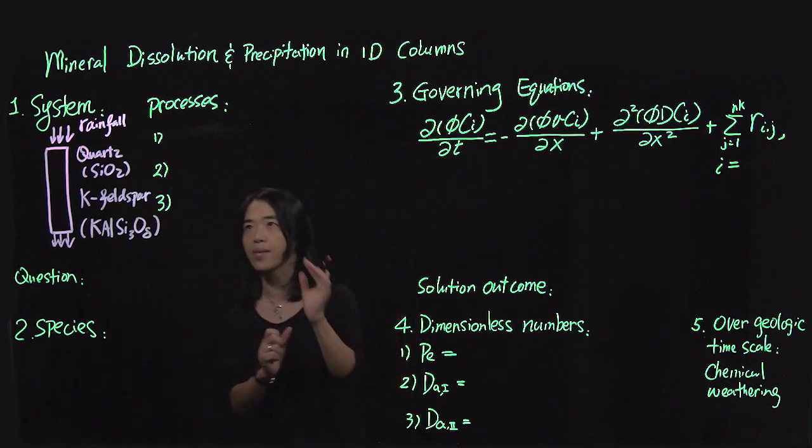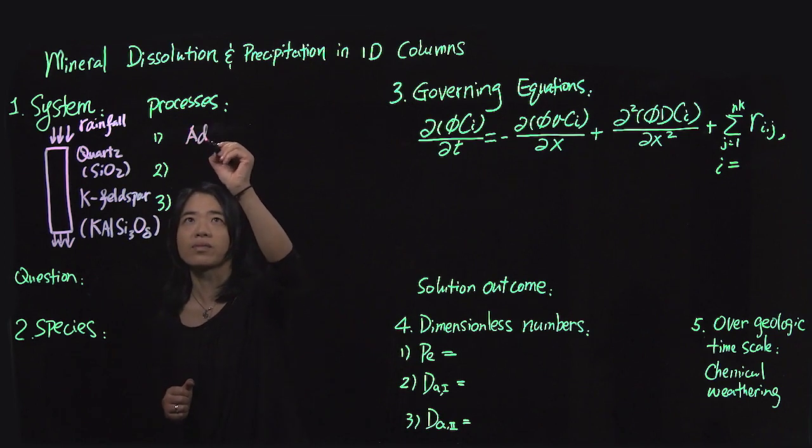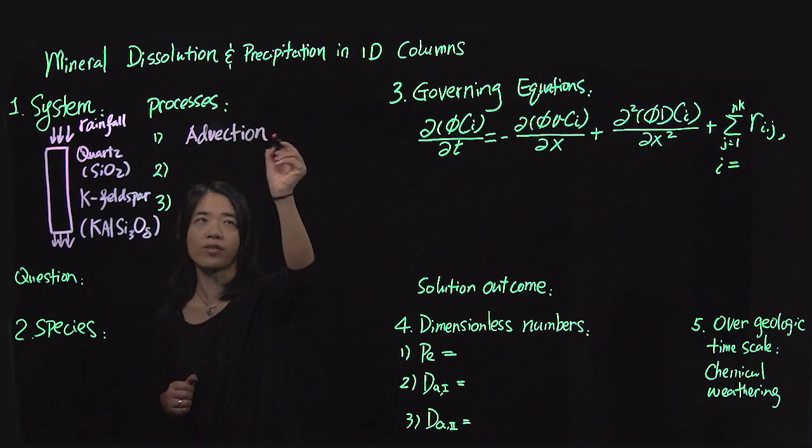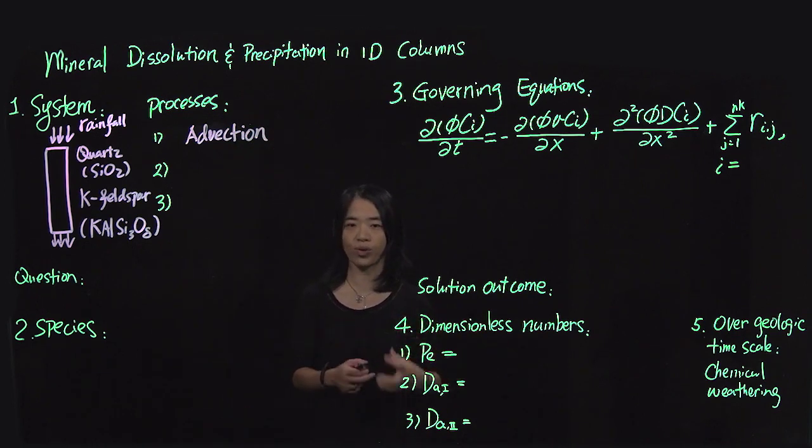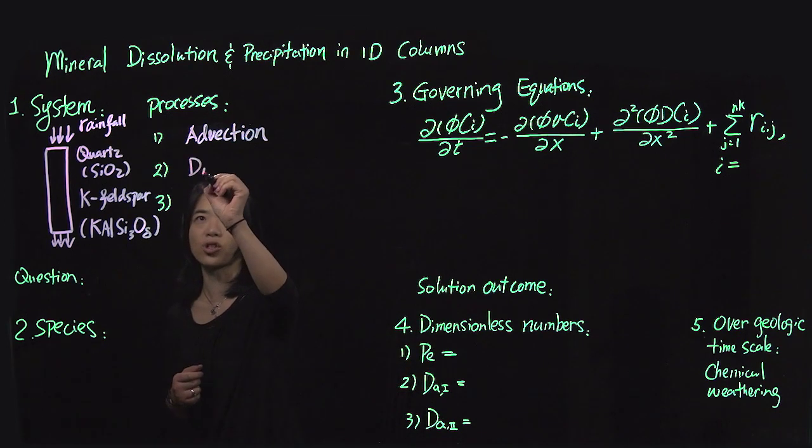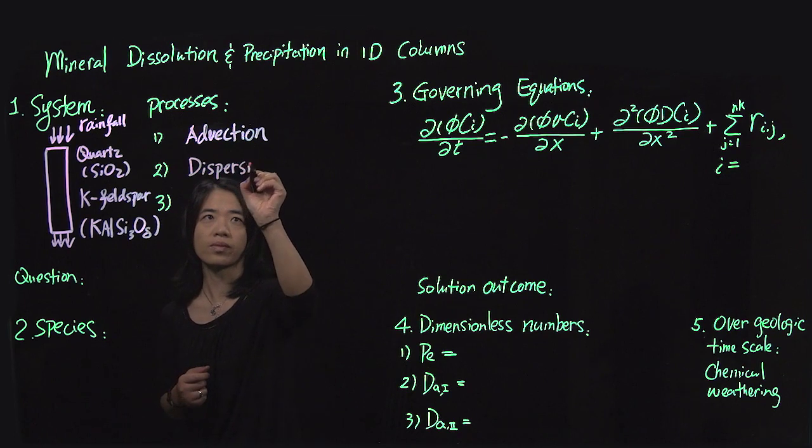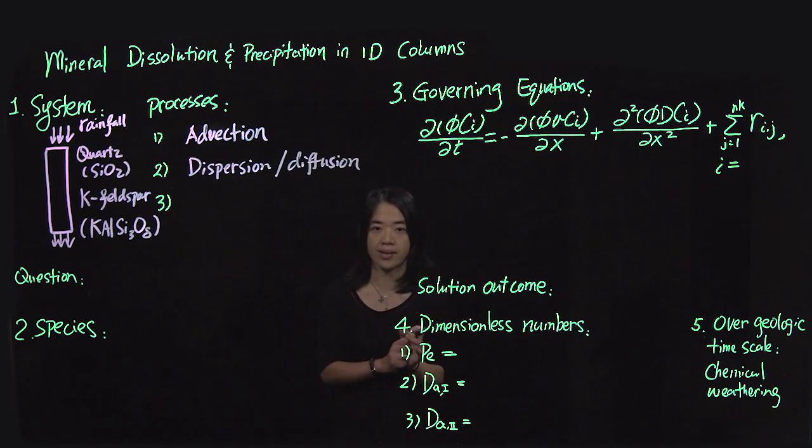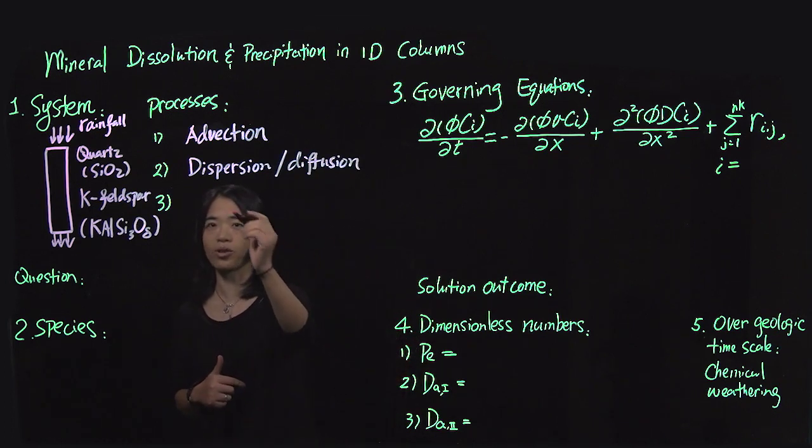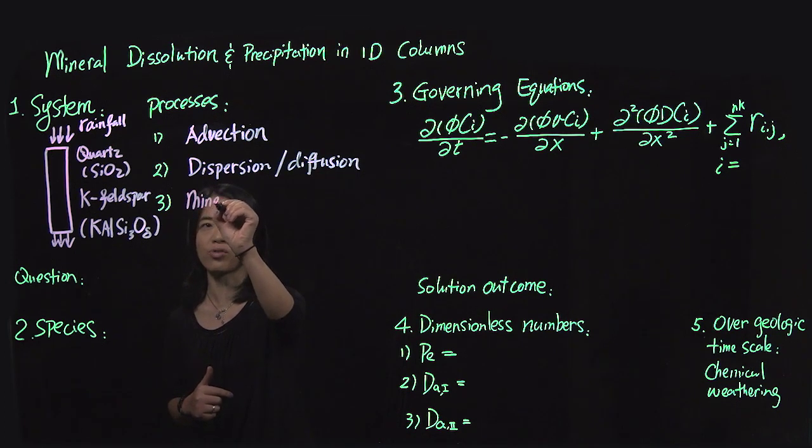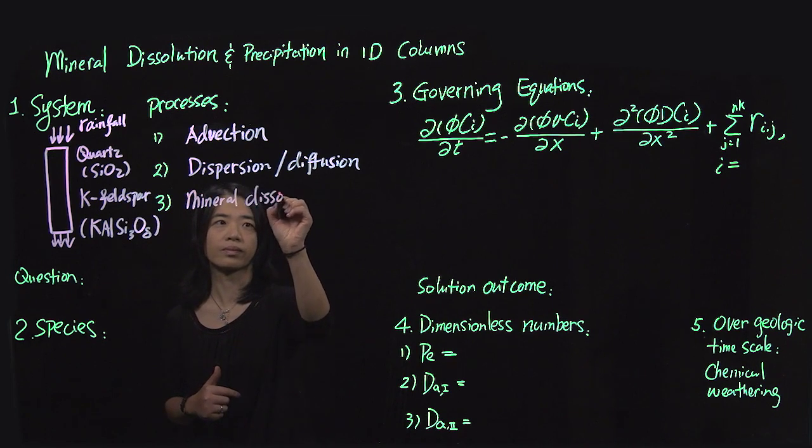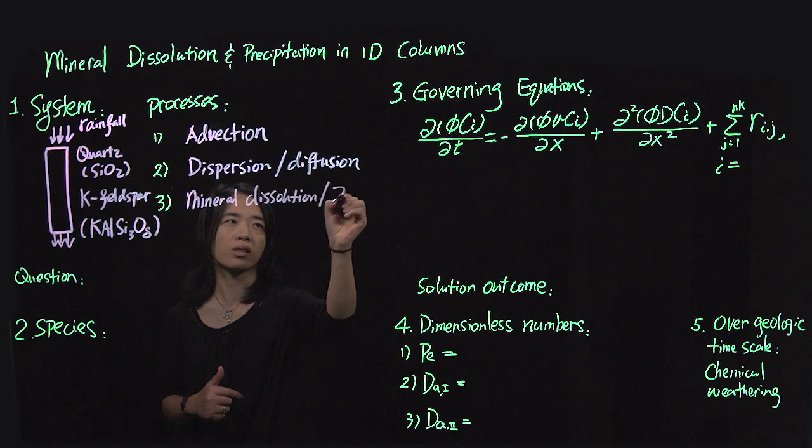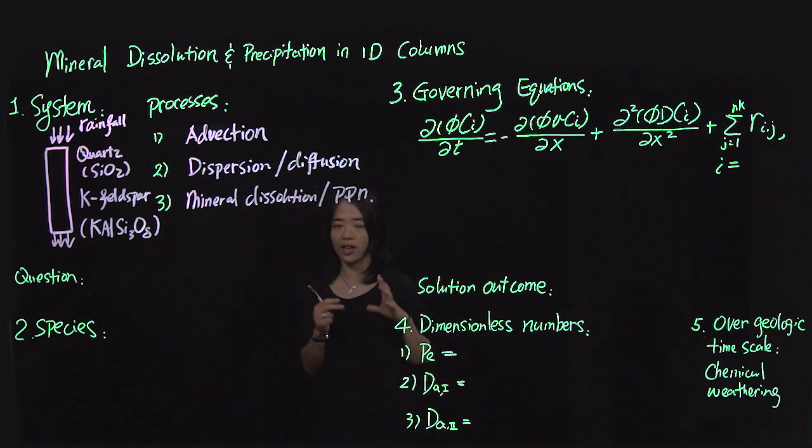You can think about several processes happening at the same time. One is advection. So this is the same advection we talked about in one unit set with the tracer. Essentially the flow brings out the chemicals, but also the dispersion, diffusion. This again is the same as what we talked about last time in the advection equations. But then the last one that is different from the previous one is the reaction, which is mineral dissolution precipitation reaction. So essentially this is combining the advection equation unit with mineral dissolution precipitation reaction unit.